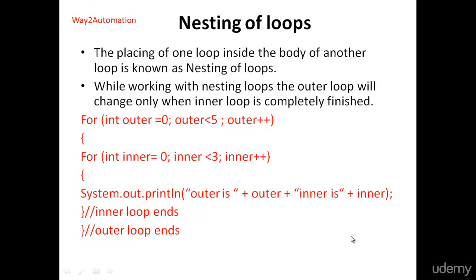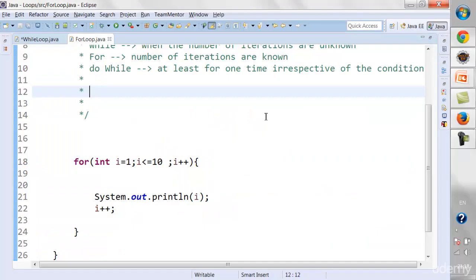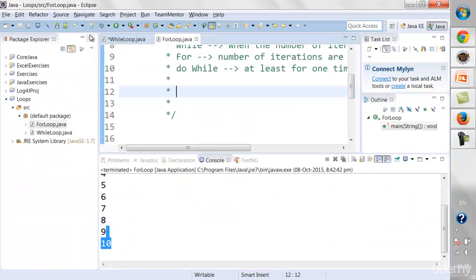Next, we take a look at nesting of loops, also called nested loops. Whenever we place one loop inside the body of another loop, that is called nesting. We can have a for loop inside a while loop, or a do-while loop inside a for loop. When working with nested loops, the outer loop changes only when the inner loop is completely finished. Let's look at a practical example.